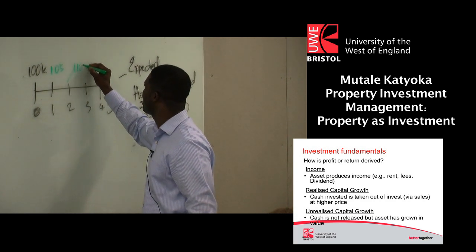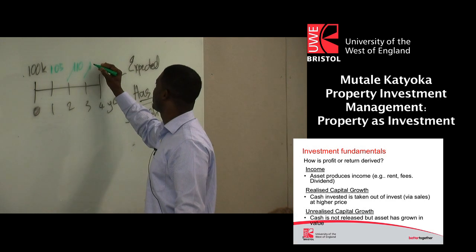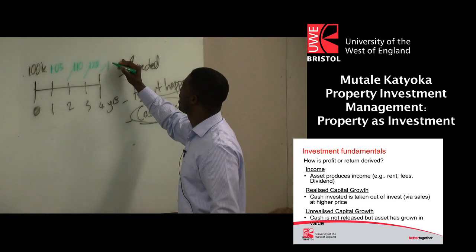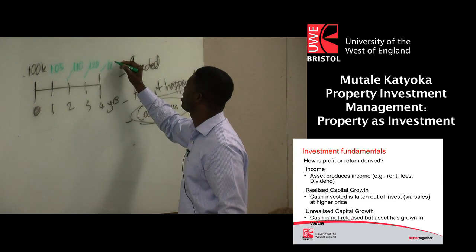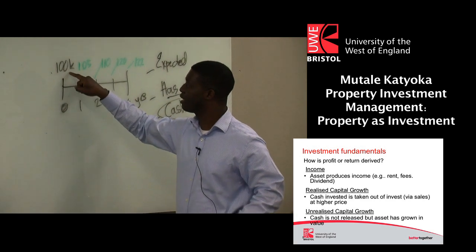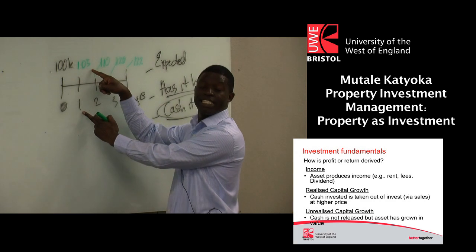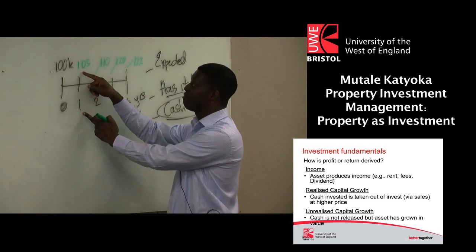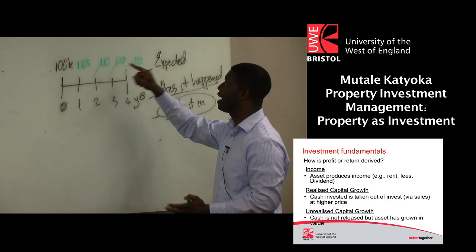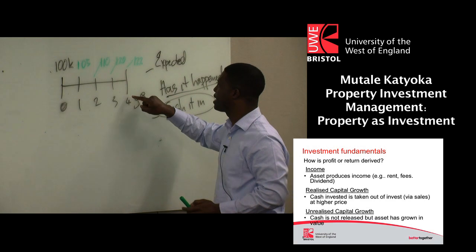In year two, we've made 110. By year three, it's probably 120. We're really doing fine. And in year four, it's about 122. So the value has increased from 100K at purchase, to 105,000 after year one, continued increasing in year two, year three, and up to about 122K by year four.